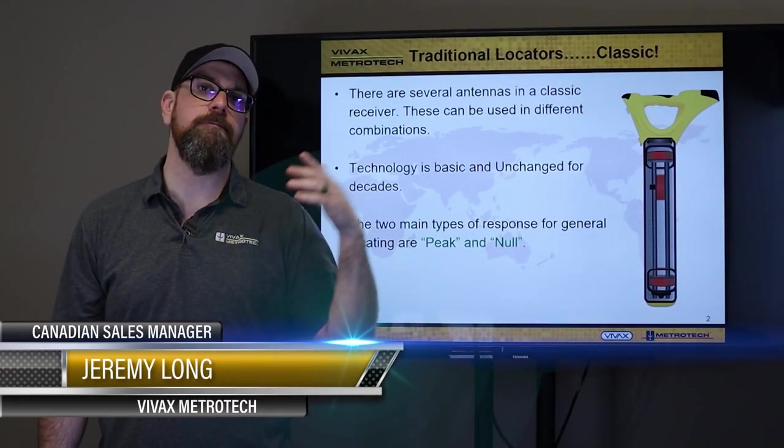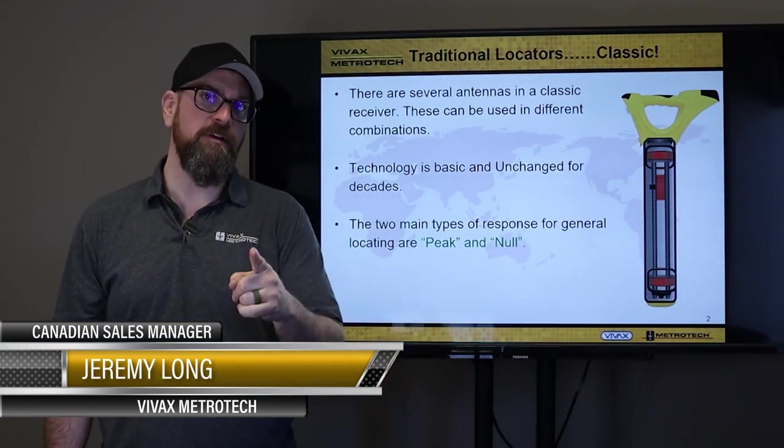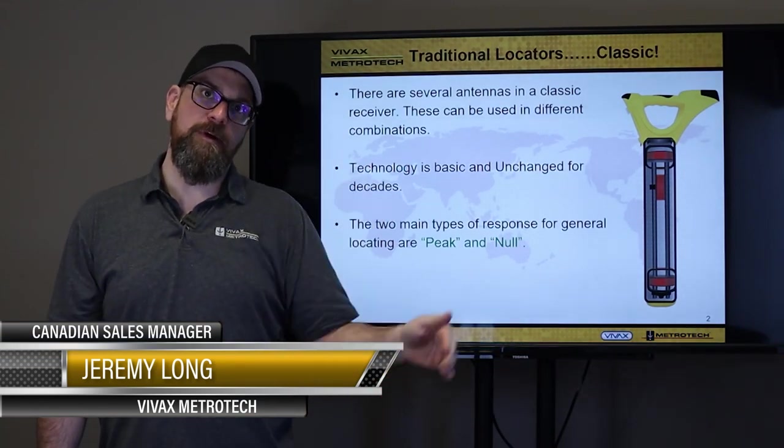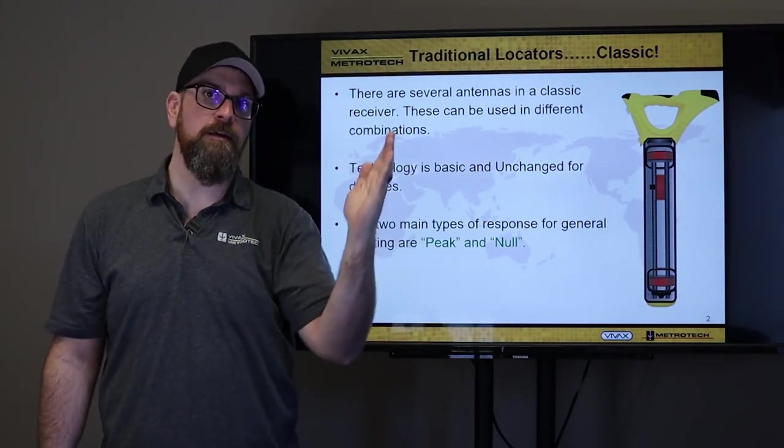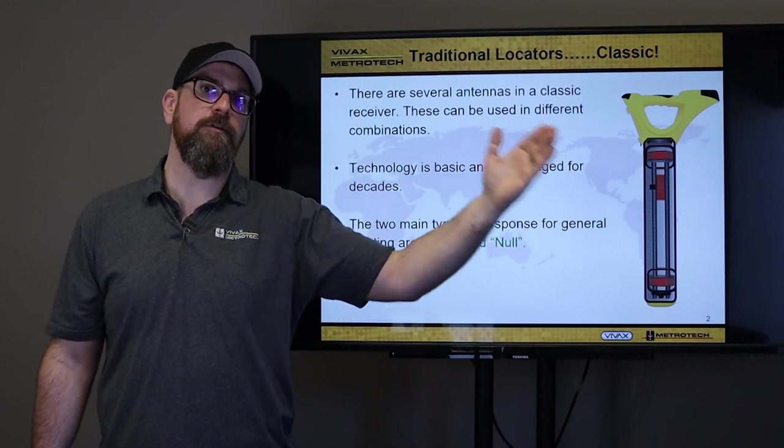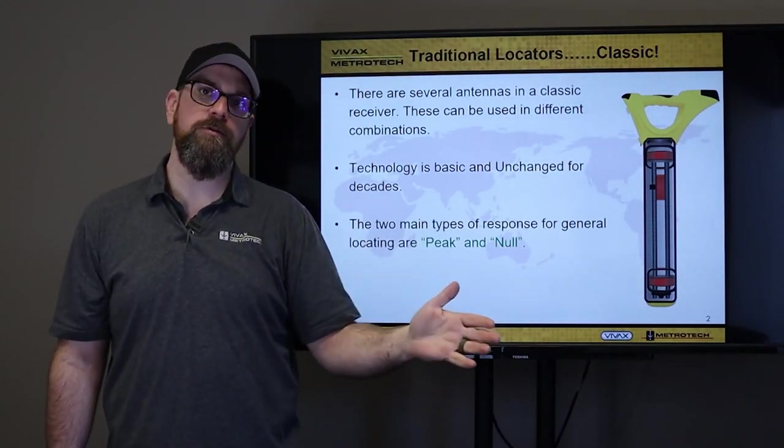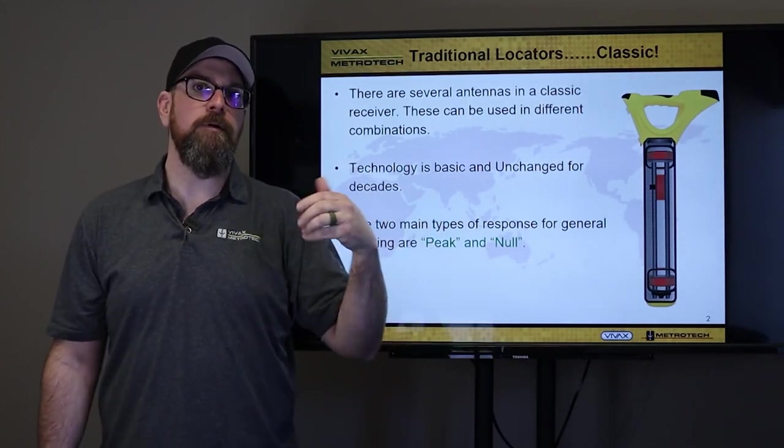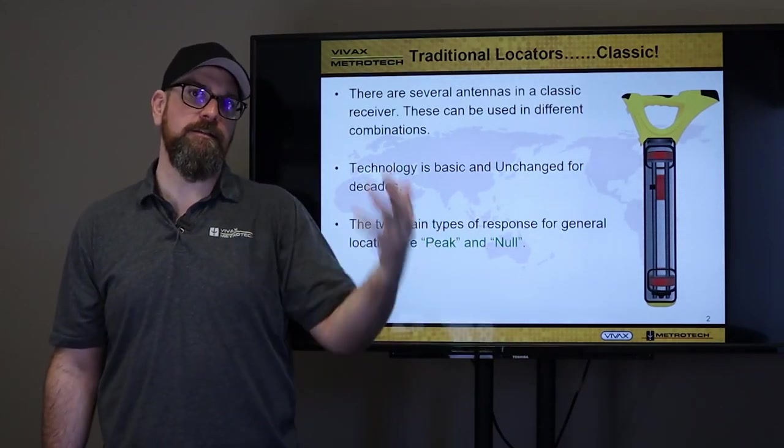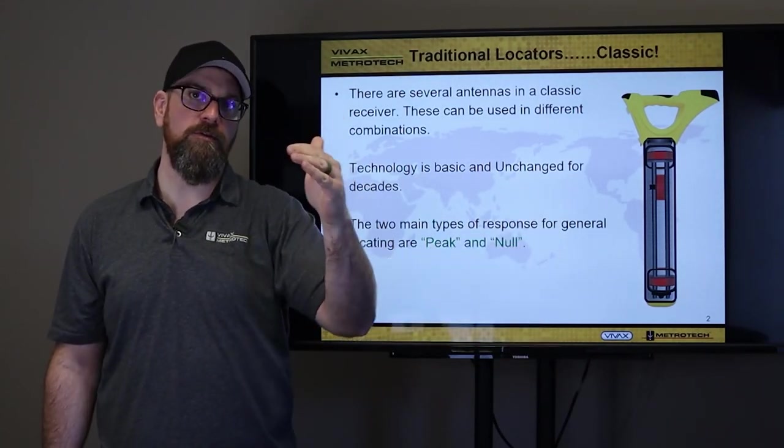Inside the receiver, we have some coils and what they do is they pick up an electromagnetic field. I'll show you that field in a minute, but they pick up that electromagnetic field and they're able to see the peak, which is the top dead center of the field or the null, which is the outer edges. We can put those together with newer technology now and show it to you on screen, but really what it's doing is it's taking a slice of that electromagnetic field and looking at either the outer edges or the top dead center.